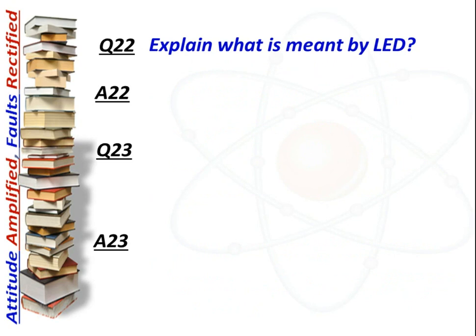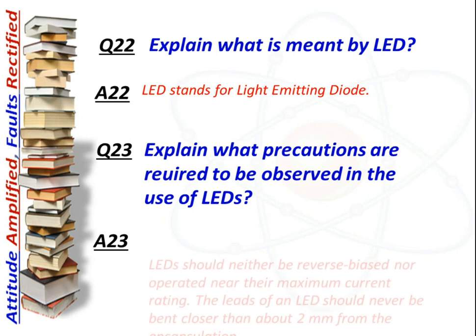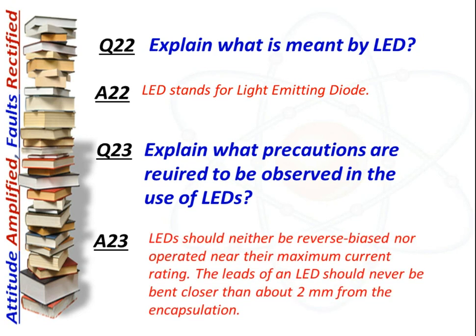Next question: What is meant by LED, and what precautions are required in its use? Answer: LED stands for Light Emitting Diode. LEDs should neither be reverse biased nor operated near their maximum current rating. The leads of an LED should never be bent closer than about 2 mm from the encapsulation.